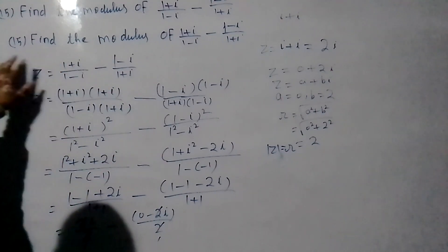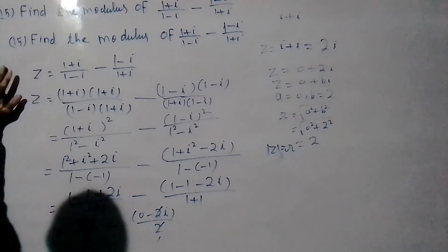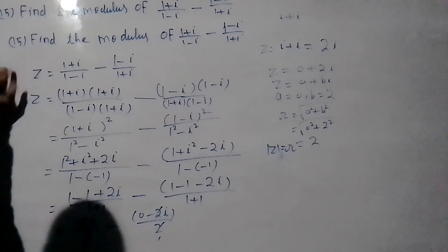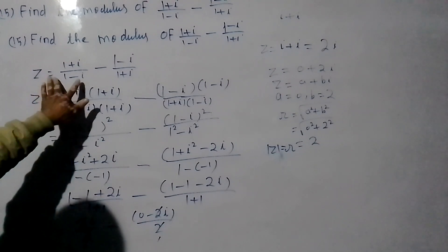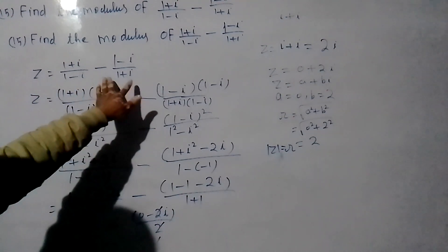So, given complex number is 1 plus iota upon 1 minus iota minus 1 minus iota upon 1 plus iota. First term denominator, second term denominator.